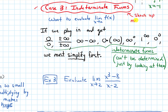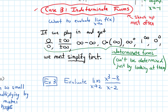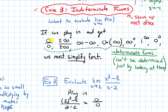Let's look at an example where we evaluate the limit as x approaches 2 of (x³ - 8)/(x - 2). We start by plugging in — that is always our first step. If we plug in 2, we get (2³ - 8)/(2 - 2). 2 cubed is 8, 8 minus 8 is 0, and 2 minus 2 is 0. So we have 0/0, which is one of these indeterminate forms.